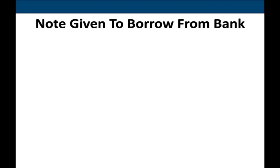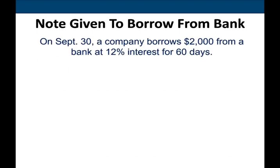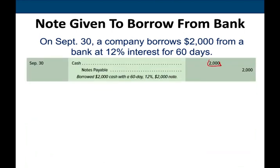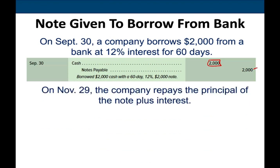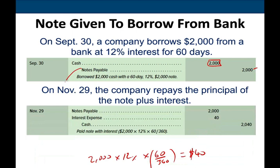We could also issue a note for borrowing money from a bank. On September 30th, a company borrows $2,000 from the bank at 12% interest. We debit cash $2,000 and credit notes payable $2,000. Sixty days later, on November 29th, we pay back the note plus interest: $2,000 × 12% × 60/360 = $40 of interest. We debit notes payable $2,000, debit interest expense $40, and credit cash $2,040.